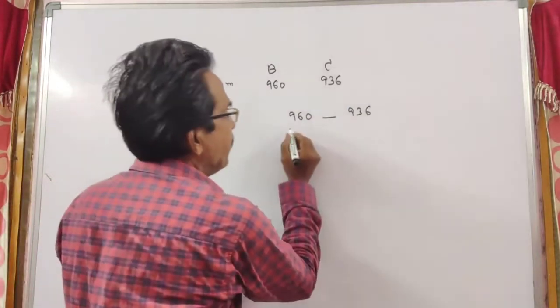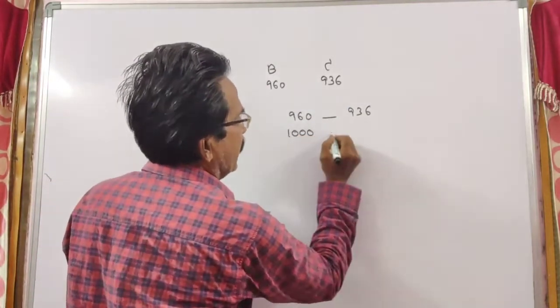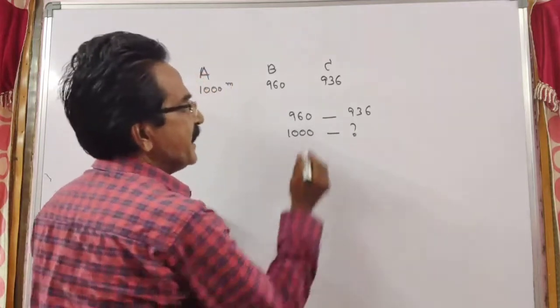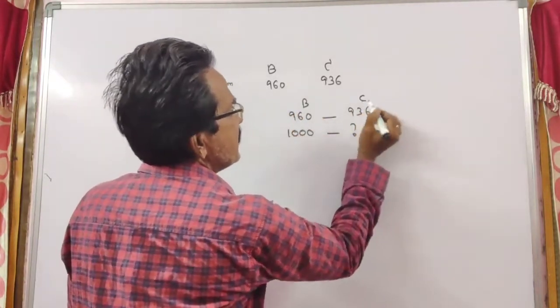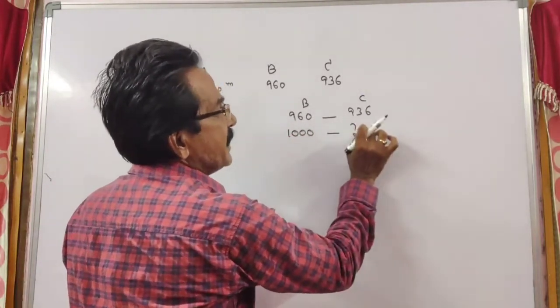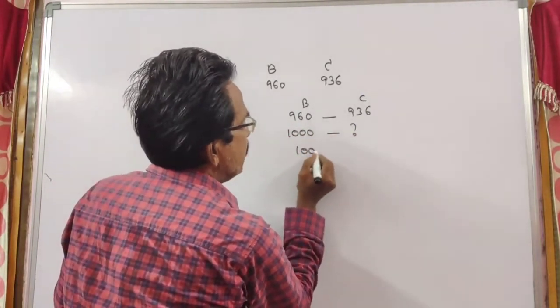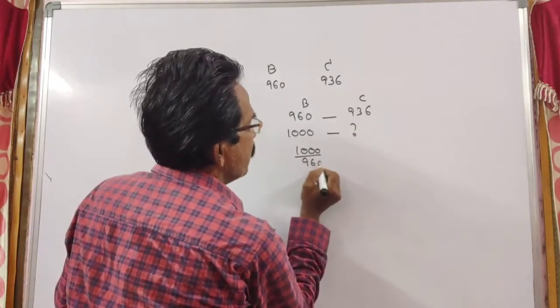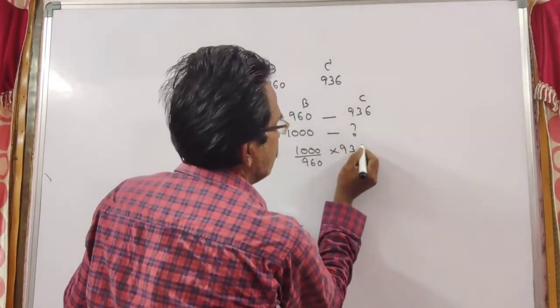If B runs 1000 meters, then C runs... B runs 960, C runs 936. If B runs 1000, C runs 1000 by 960 into 936.